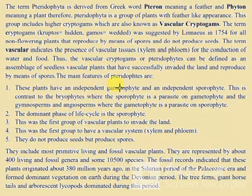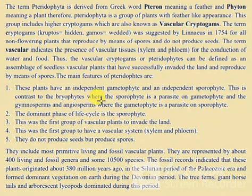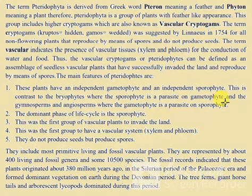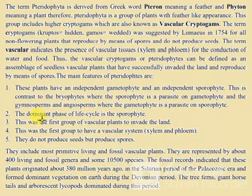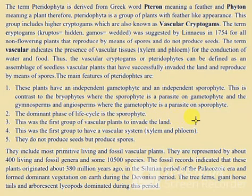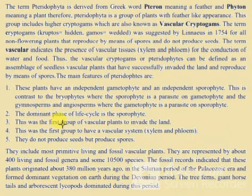The main feature of pteridophytes is that these plants have an independent gametophyte and an independent sporophyte. This is in contrast to the bryophytes, where the sporophyte is a parasite on the gametophyte, and the gymnosperms and angiosperms, where the gametophyte is a parasite on the sporophyte. The dominant phase of the life cycle is the sporophyte.